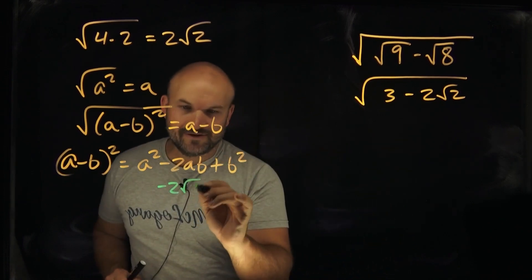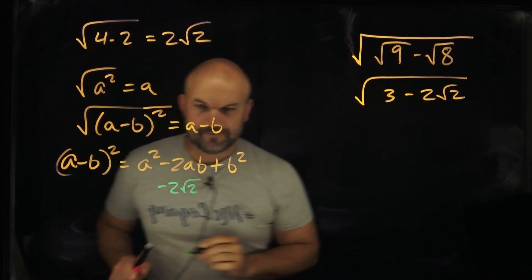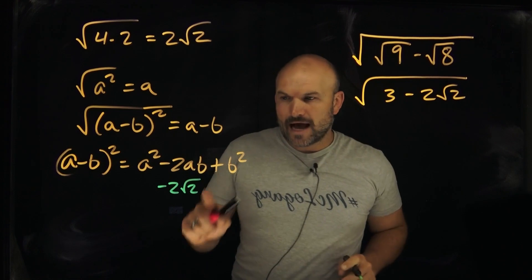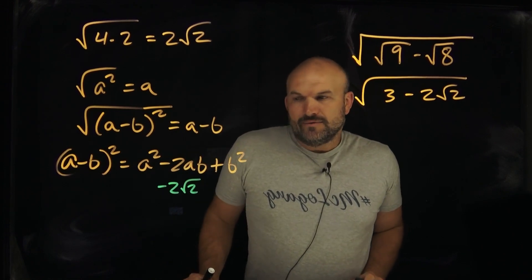And then you can say, well, what about we have a is the square root of 2, right? Then what could b be? Now, in this case, I would say, well, we don't have a b.